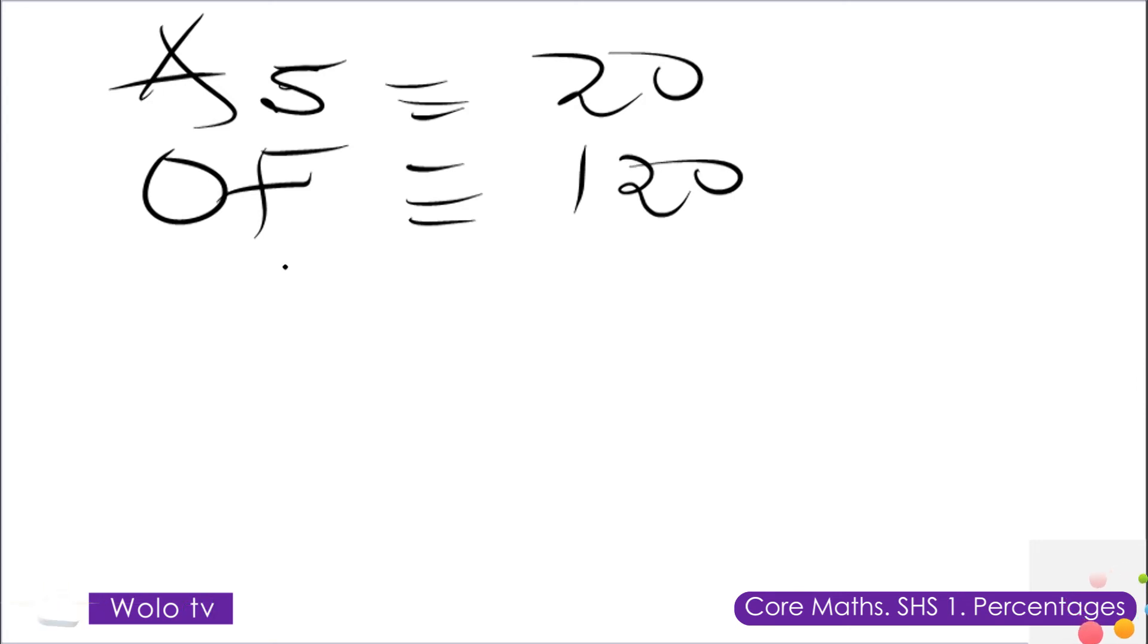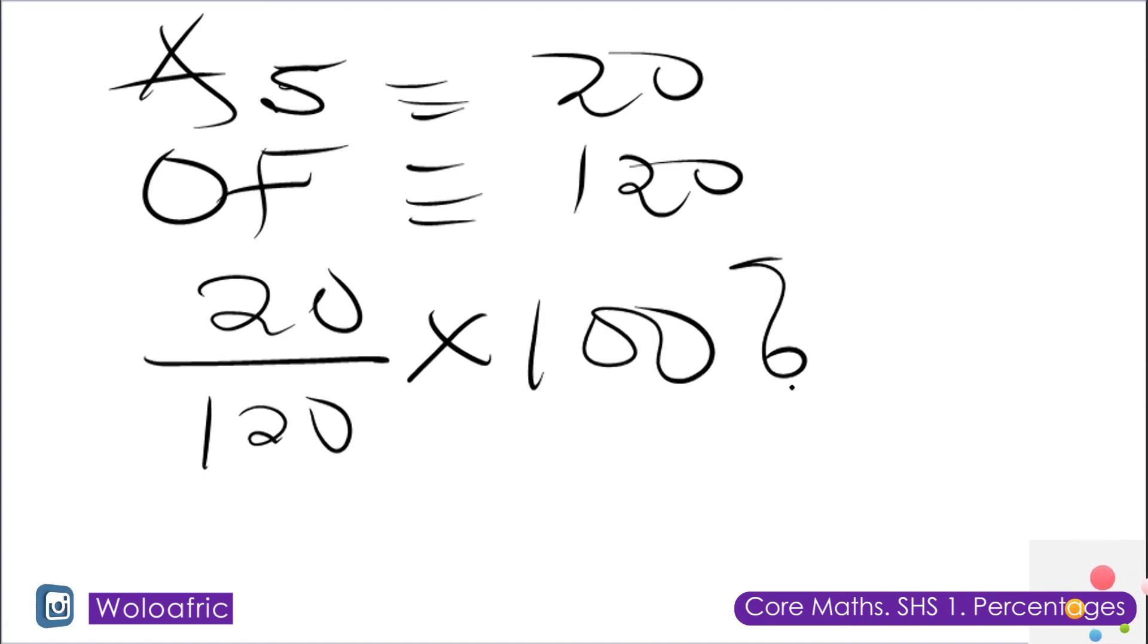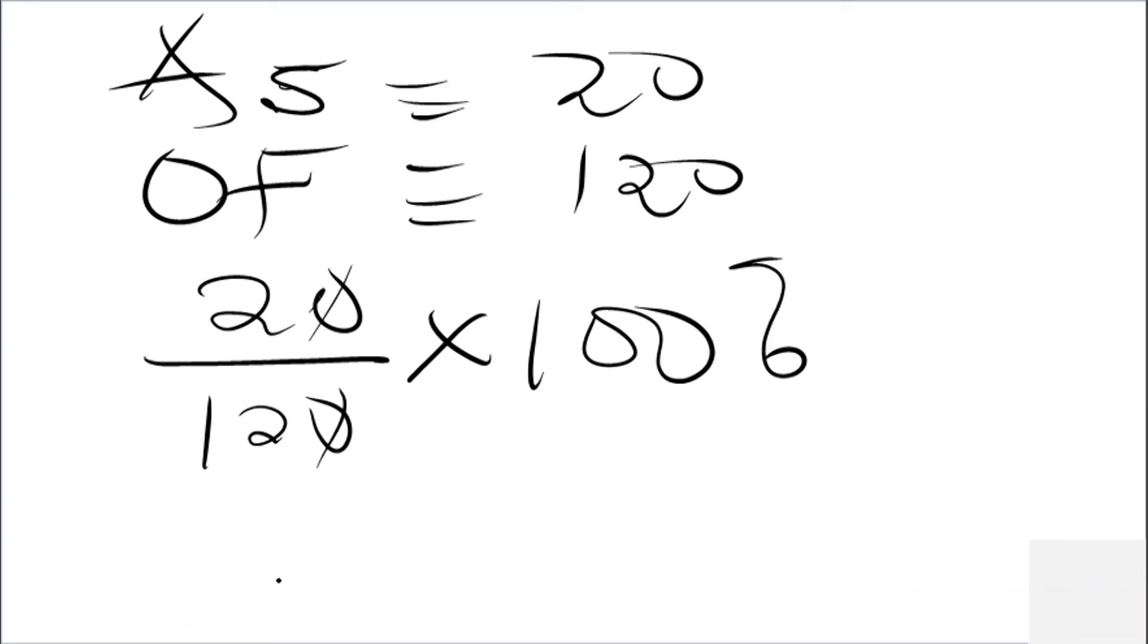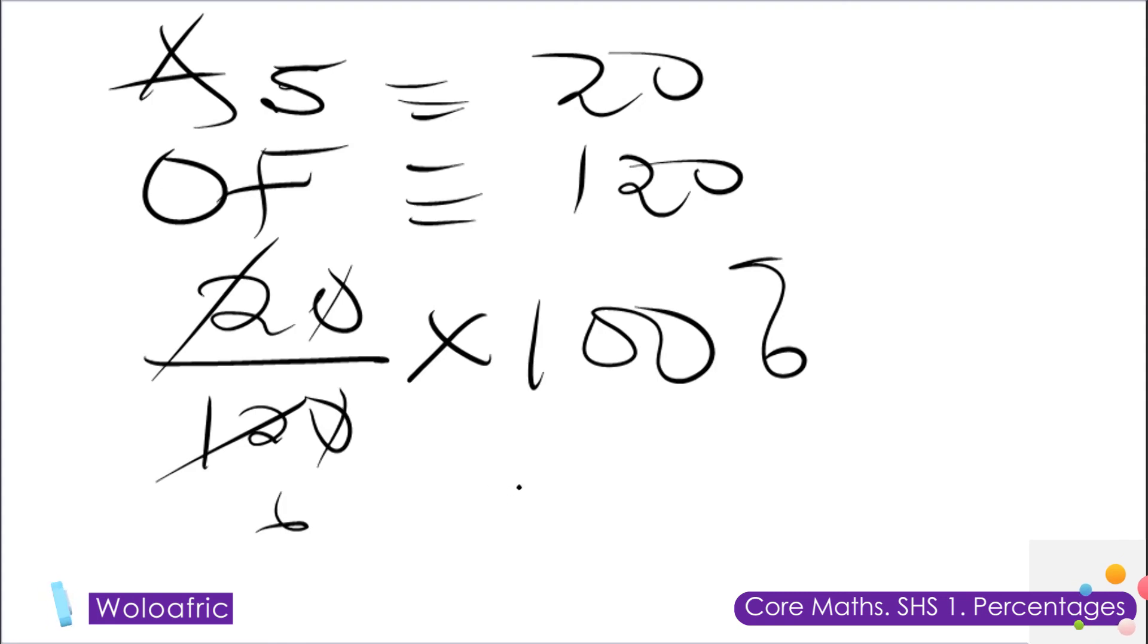So expressing 20 as a percentage of 120, 20 is equivalent to as whilst of is also equivalent to 120. So 20 as a percentage of 120 simply becomes 20 out of 120 times 100%. So what do we do? Just by proper cancellation, when this is simplified, we end up getting an answer which is 31.25%.